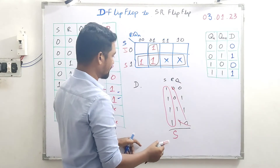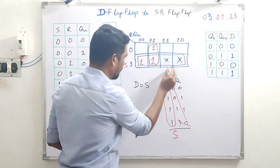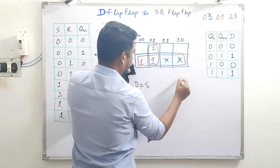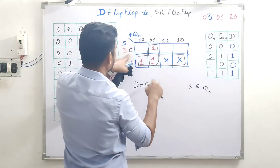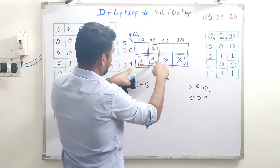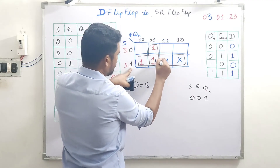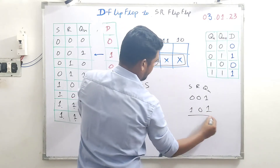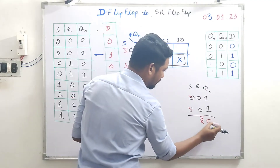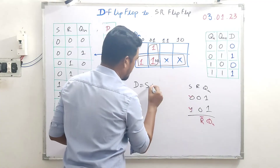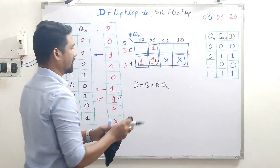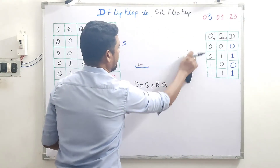From the quad we get the term S. Now for the pair: the cells 0-0-1 and 0-1-1, giving combinations S=0, R=0, Qn=1 and S=0, R=1, Qn=1. Here S and Qn are constant at 0 and 1 respectively while R is changing, so R gets eliminated and we are left with R-bar and Qn — giving the term R̄Qn. So the final expression is D = S + R̄Qn.